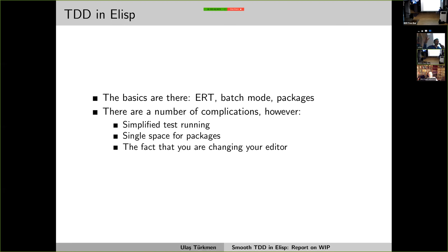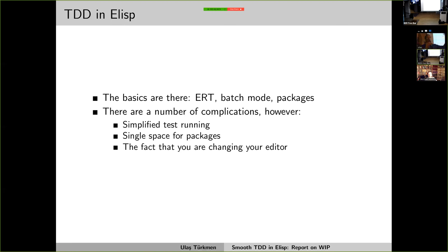But that's not good enough. What's missing: first, simplified test running with a single key binding — in abl-mode I can do Ctrl-C T and it runs that one test. Second, virtual environments like in Python — that sandbox concept is missing in Emacs. And there's a fundamental problem: you're changing your editor while working on the code. I'm working on abl-mode, changing it, loading the file to try out new features, and in the middle of that I need to work in Python and suddenly abl-mode is broken because I just changed it.